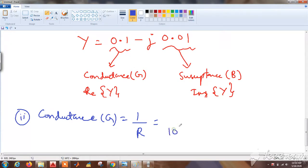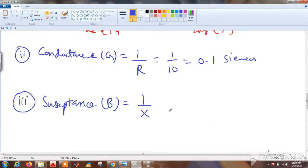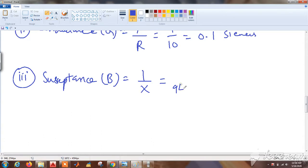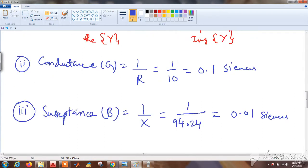Similarly for susceptance B, we know that it is inverse of the reactance, so we can directly apply. We got reactance as 94.24, so if you do 1 by 94.24 we will get 0.01 ohm inverse or siemens. You can calculate like this, or else you can directly inverse the admittance and get your results.